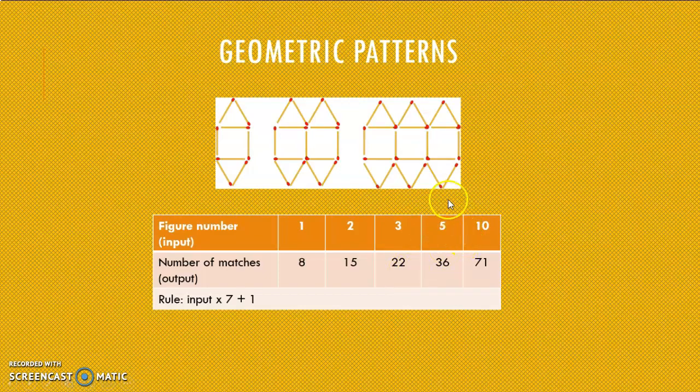So now, if I ask you what will my 5th figure, how many matches for my 5th figure, I apply my rule. 5 times 7 is 35, plus 1 is 36. My 10th figure will have 71, since 10 times 7 is 70, plus 1 is 71.